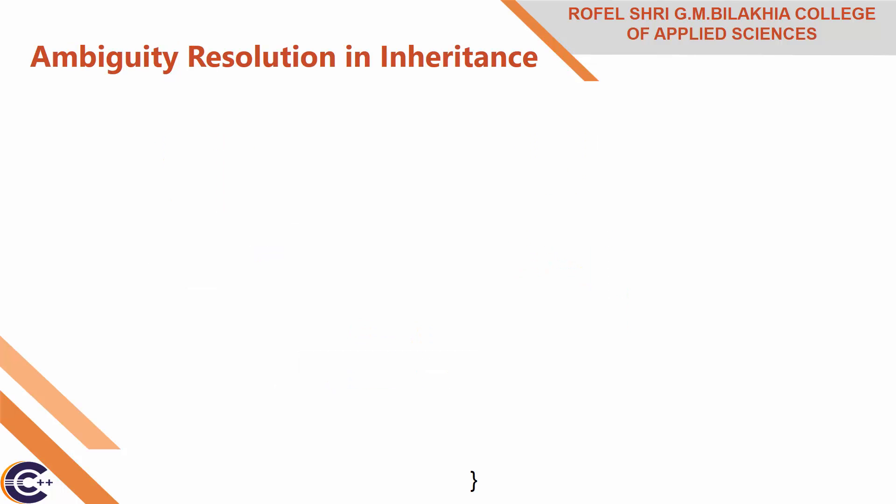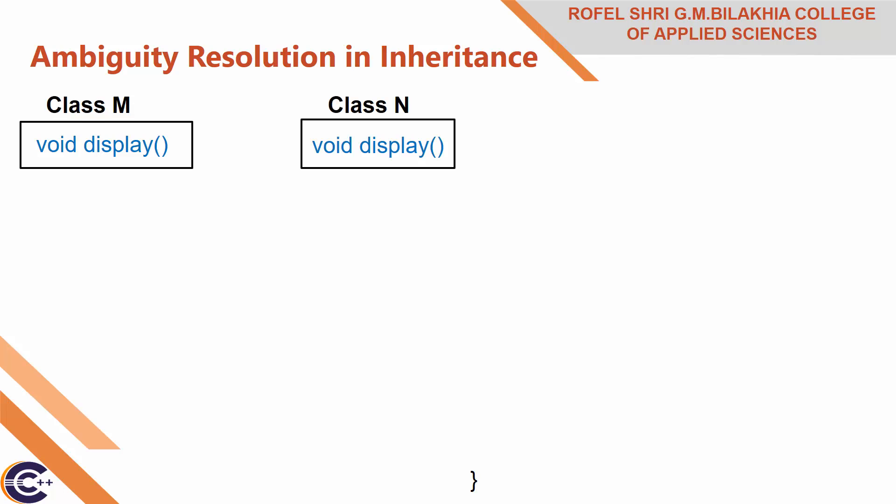Now with multiple inheritance there is a problem called ambiguity resolution in inheritance. Occasionally we may face a problem when a function with the same name appears in more than one base class. For example, there is one base class M with a member function display, and another class N also with a member function display — the same name in both classes.